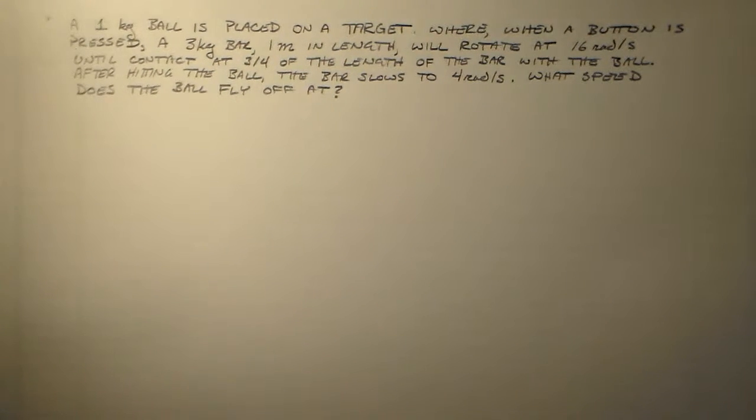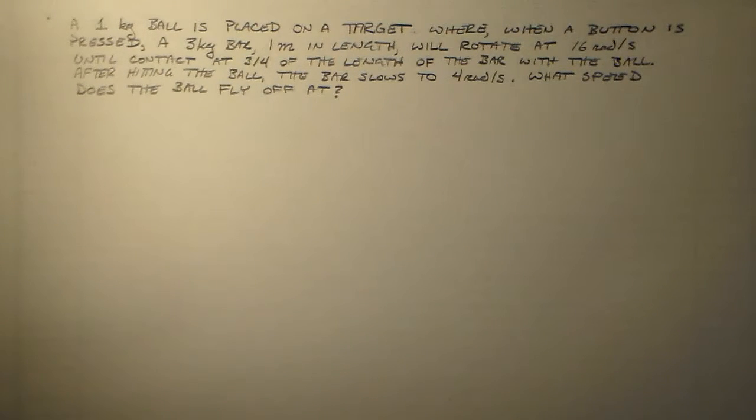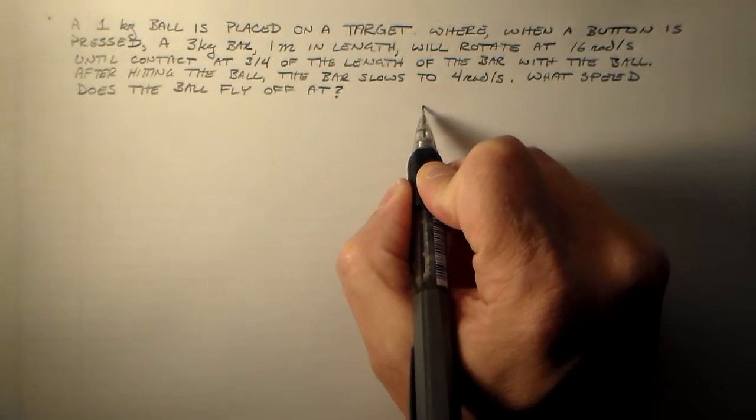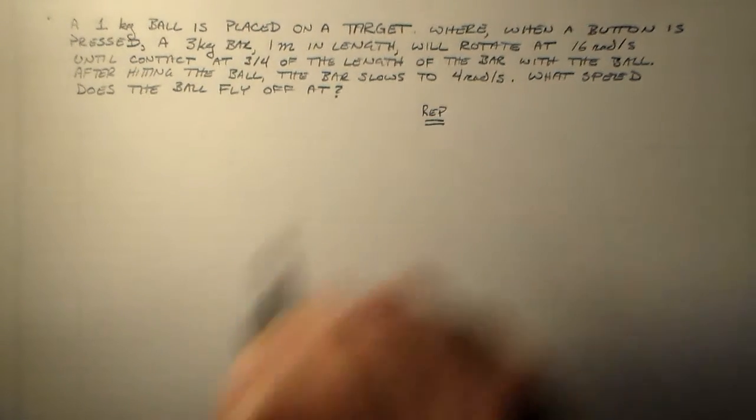Okay, I'd like to try this problem where I've got a one kilogram ball that's placed at a target where a rotating bar is going to hit it. And when it hits it, when the bar hits the ball, the ball will fly off into who knows where at some speed. And I want to figure out what speed that is. So here's the large problem statement down here. I'll obviously put that in the comments as well. There's no need for me to read it to you.